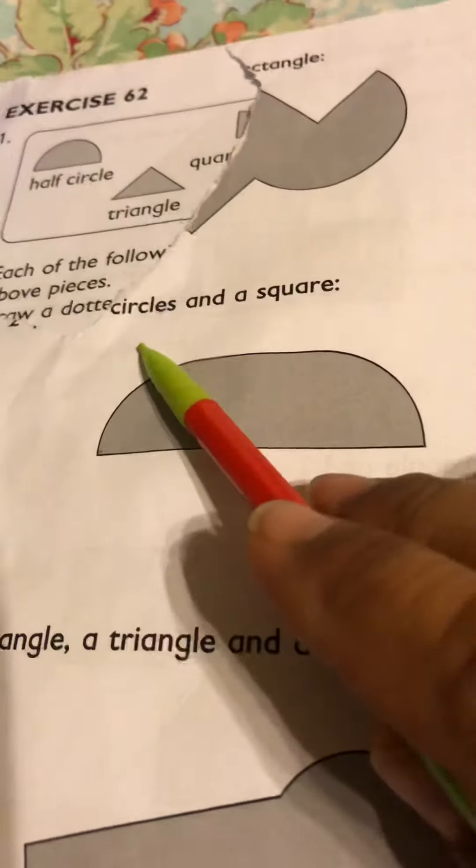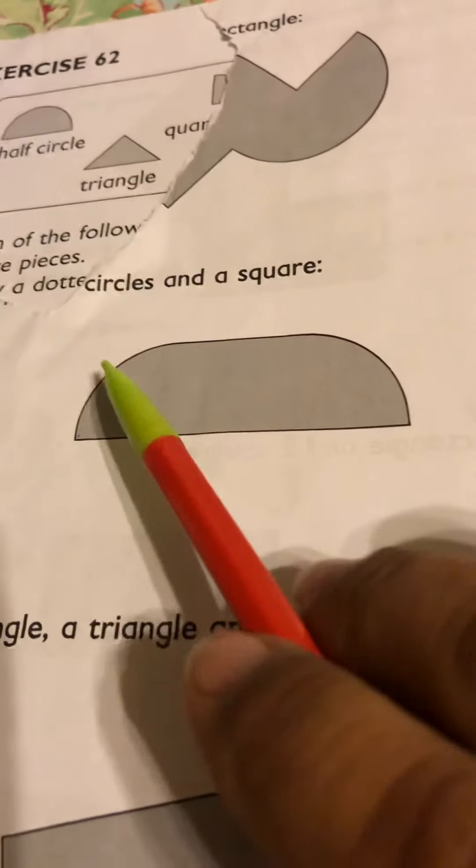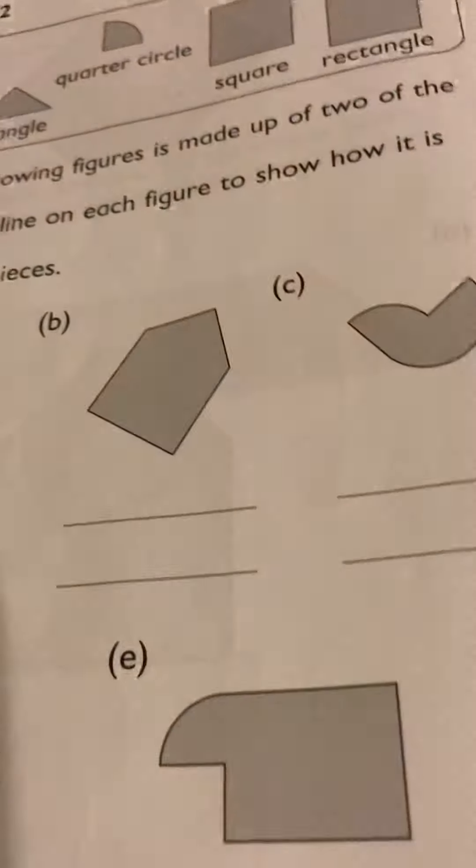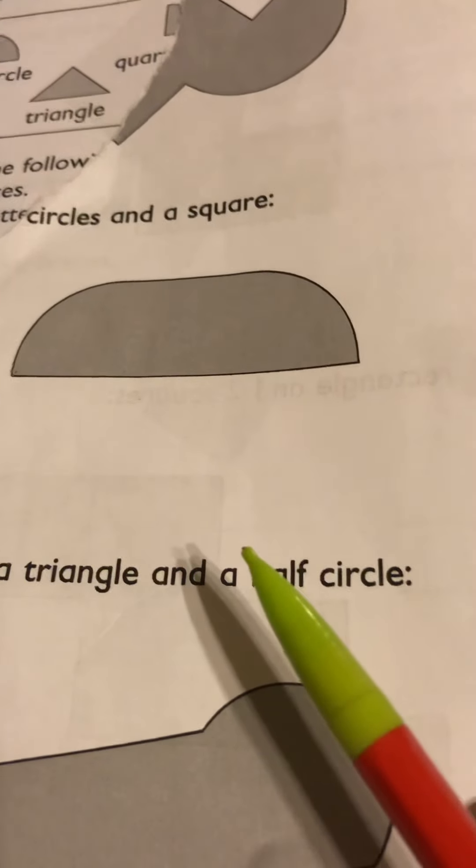Now I'm sorry our paper got torn here but if you notice it's circles and a square. So it's telling you maybe half, either it's a quarter circle and a square. So you could try that.